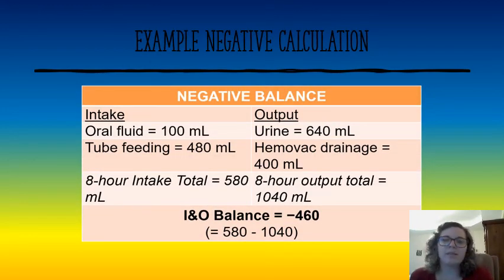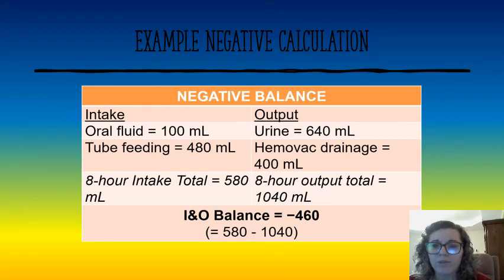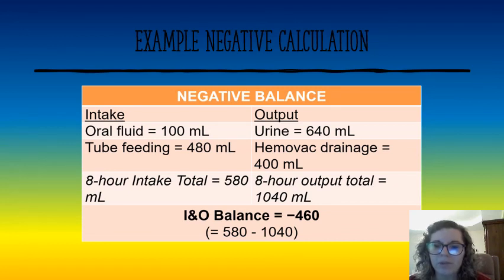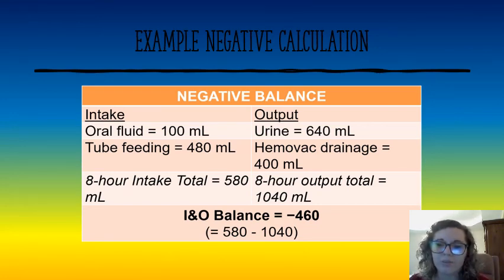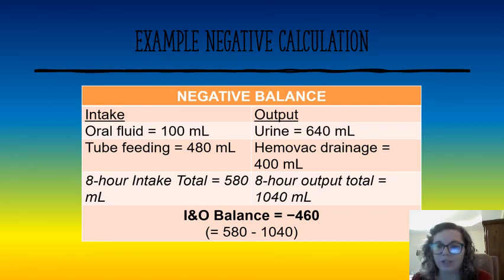Here's an example of a negative calculation: the patient received 100 mL orally and two tube feedings of 480 mL each, for a total intake of 580 mL — but wait, note the example states 580 mL total intake. During the same time frame, they urinated 640 mL and their hemovac drain produced 400 mL, giving a total output of 1,040 mL. Intake minus output gives a negative balance of 460 mL, so we need to verify whether this is appropriate or if the patient is at risk for dehydration.